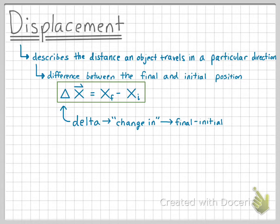It is also important to note that this arrow symbol above the displacement variable means that displacement is a vector, which means direction matters.